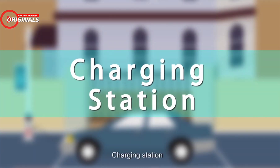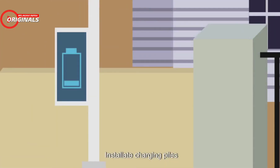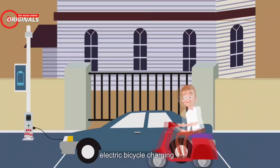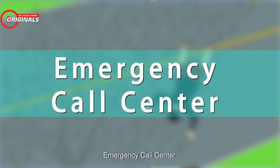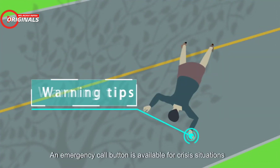Charging stations. Installations of charging piles convenient for electric vehicles and electric bicycle charging. Emergency call center. An emergency call button is available for crisis situations.